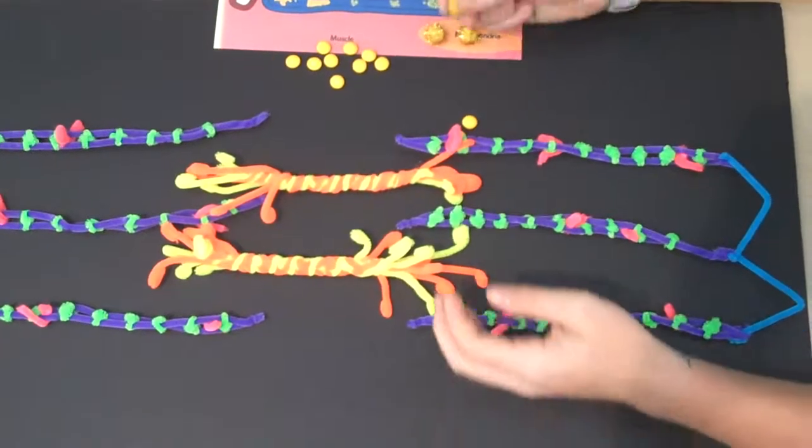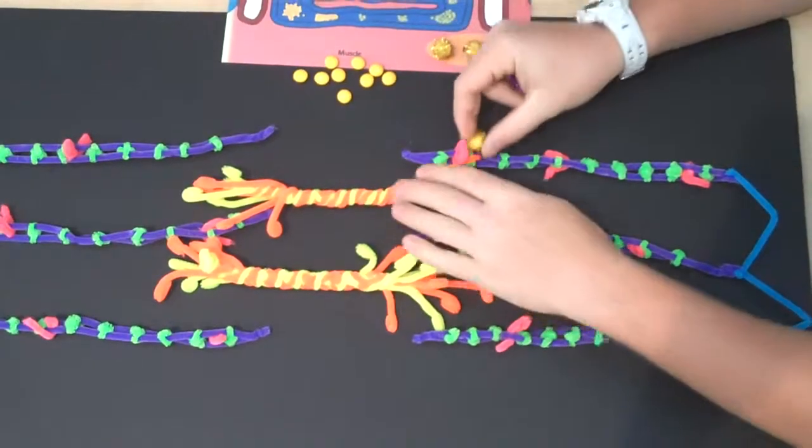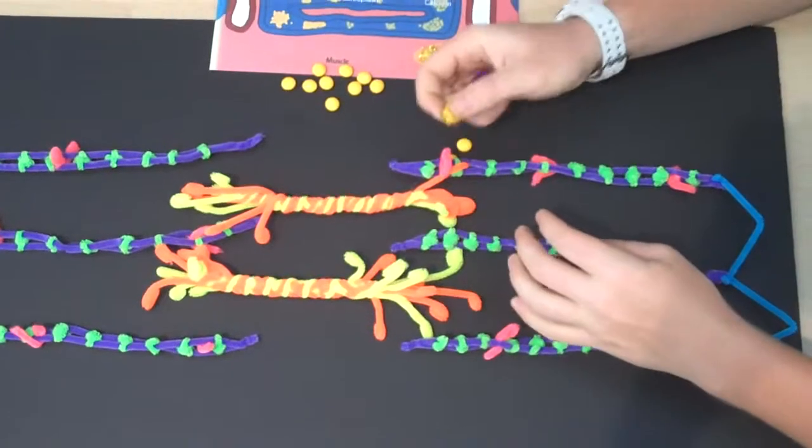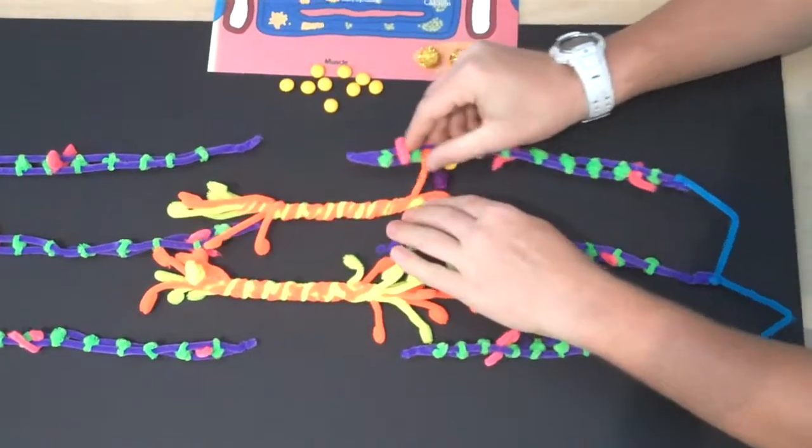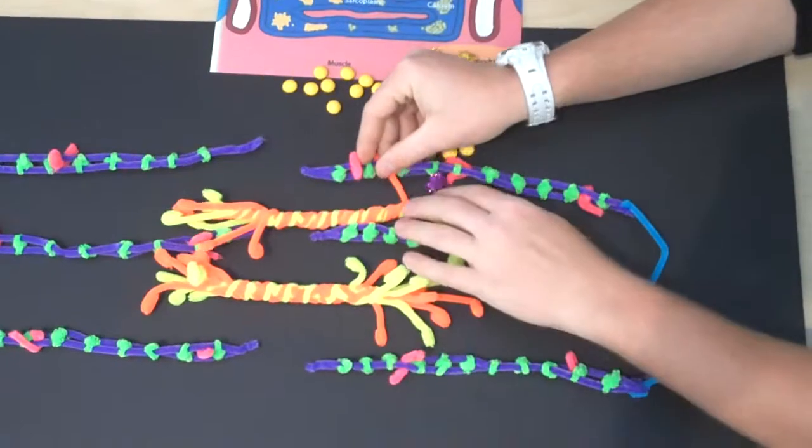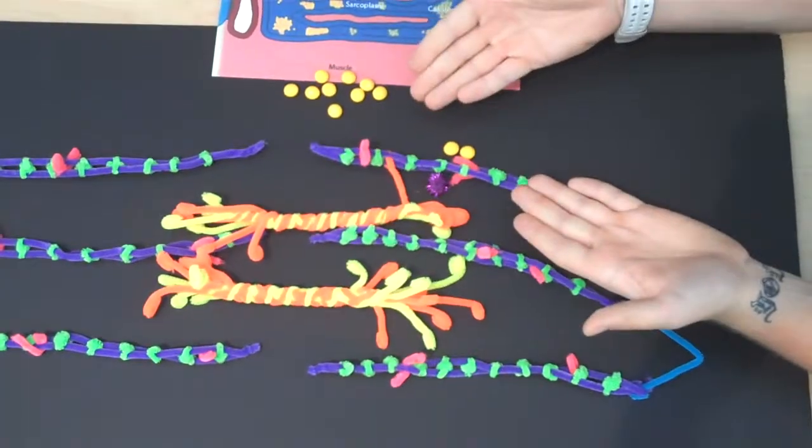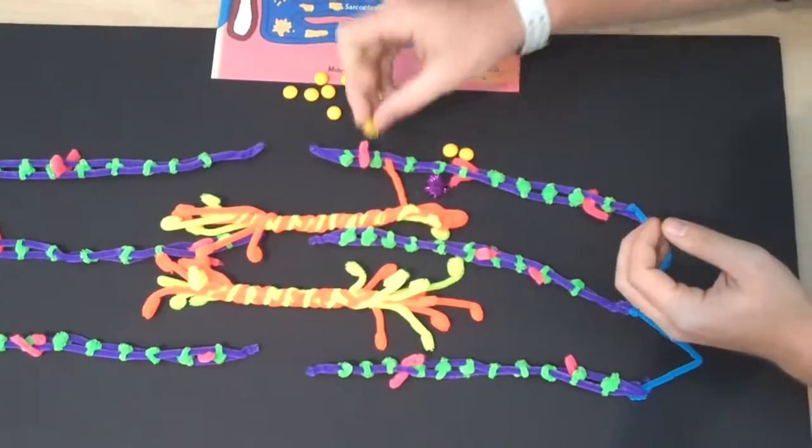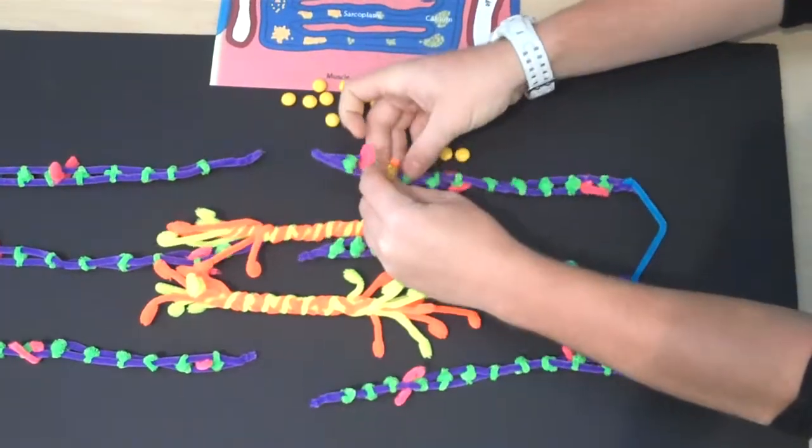Myosin returns to the low energy state, which releases ADP and slides the filaments causing the sarcomere to shorten. This is known as the power stroke. New ATP binds to the myosin head, which releases the myosin head from the active site.